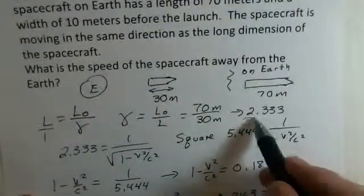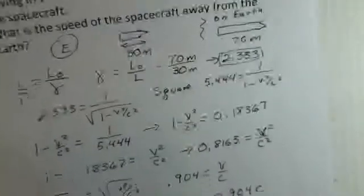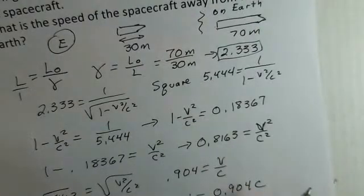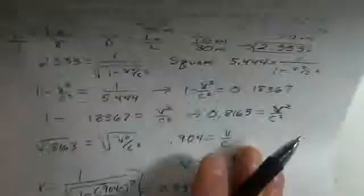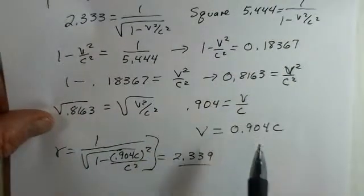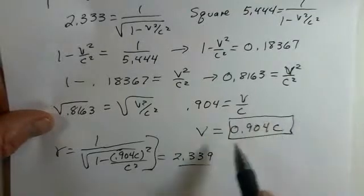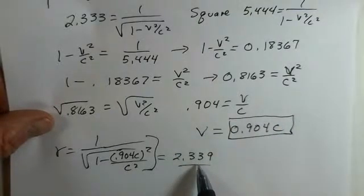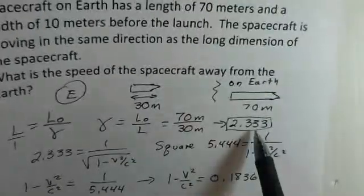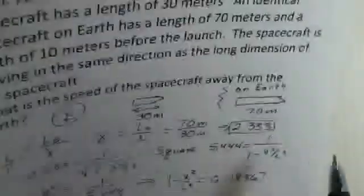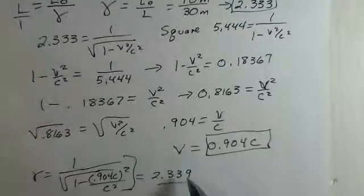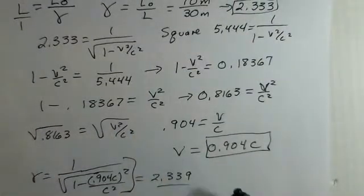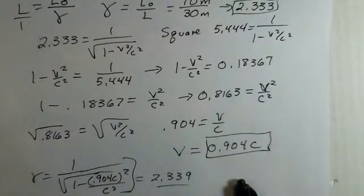If you notice, the gamma that we started with was 2.333. I've used some rounded-off numbers in the work as we run along here, but the result we're coming up with, 0.904c, has a gamma of 2.339. The gamma that we're supposed to have is 2.333—that's close enough, just some rounding of the numbers I used in these intermediate calculations. If you would keep more digits in your calculator's memory, that would work out better. Try some practice problems like this and ask your instructor questions.